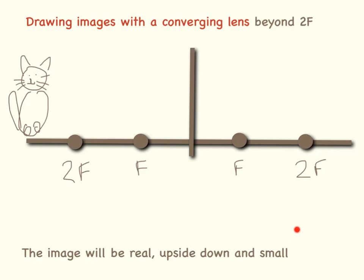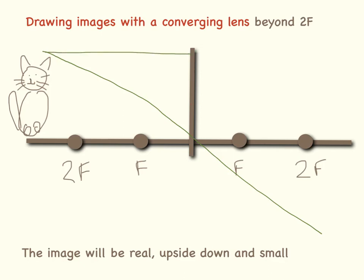I will start with drawing an image with a converging lens with the object beyond 2F. The feet are on the axis so we don't have to worry about those. Following the rules, I draw a line from the top of Primrose's head through the middle of the lens, then across with a ruler and pencil and down through the focus. This is where Primrose is going to end up — this is her head, and these are her feet. You'll notice the image is upside down and smaller than the original.